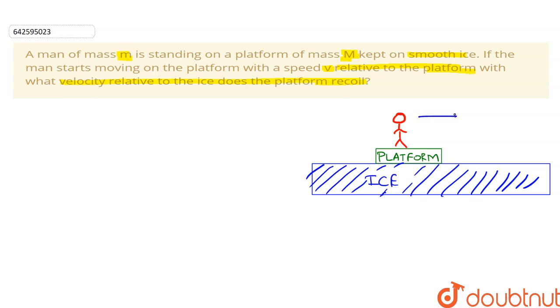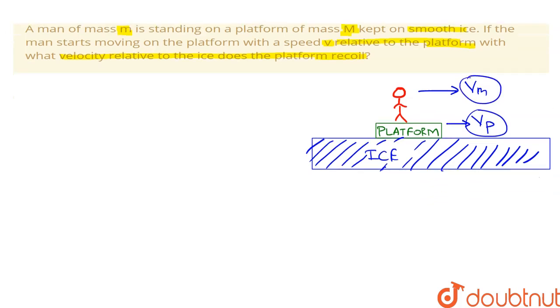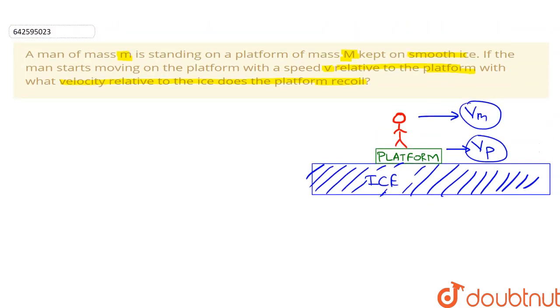Let the velocities relative to the ice be vm for the man and vp for the platform. We are given that the man starts moving on the platform with speed v relative to the platform. This means that vm minus vp is the relative velocity of the man with respect to the platform, and it equals v.